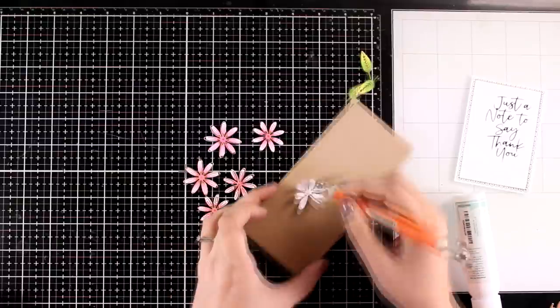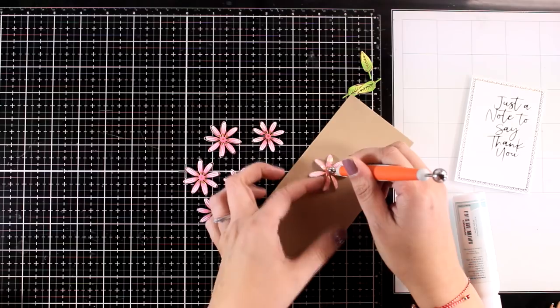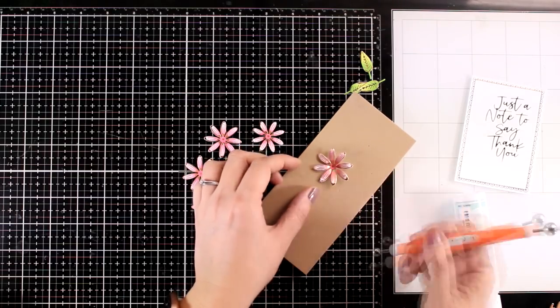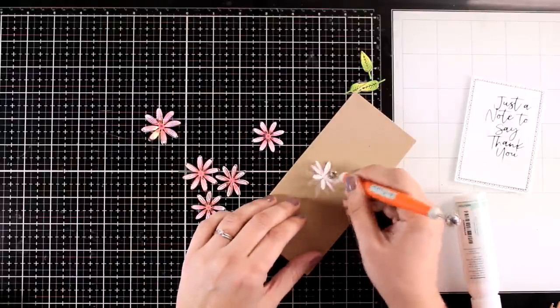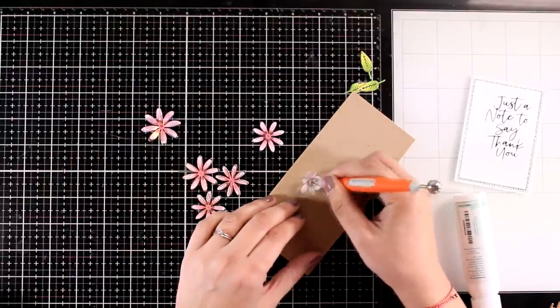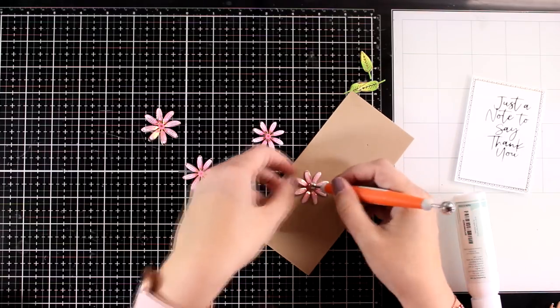So I'm going to use one of those tools that is really helpful to add some dimension on the flowers and I will repeat the same process on all of them. So I'm working at the back adding some curve on the petals and then turning it at the front and just pressing at the center.